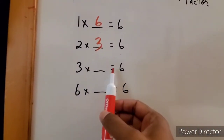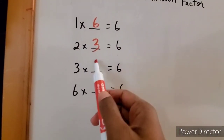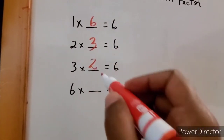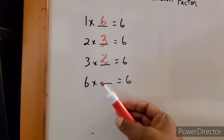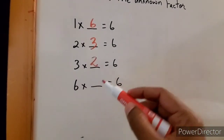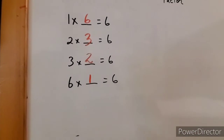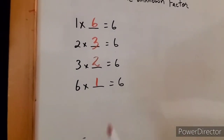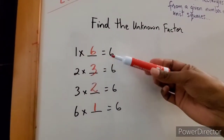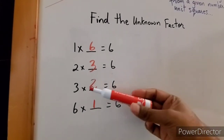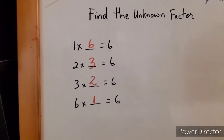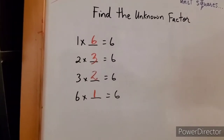Three times blank gives you six — if two times three gives you six, then switching it around, three times two will also give you six. And six times one: if one times six gives you six, even if you switch it around you still get the same product. So: one times six is six, two times three is six, three times two is six, and six times one is six. That is finding the missing factor.